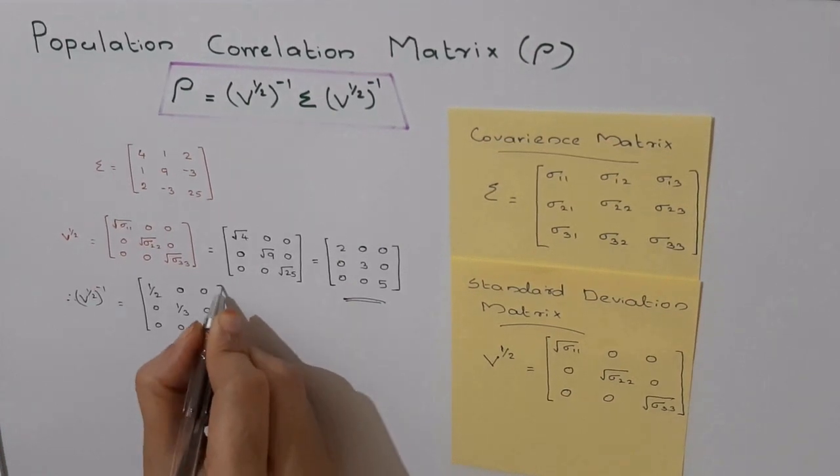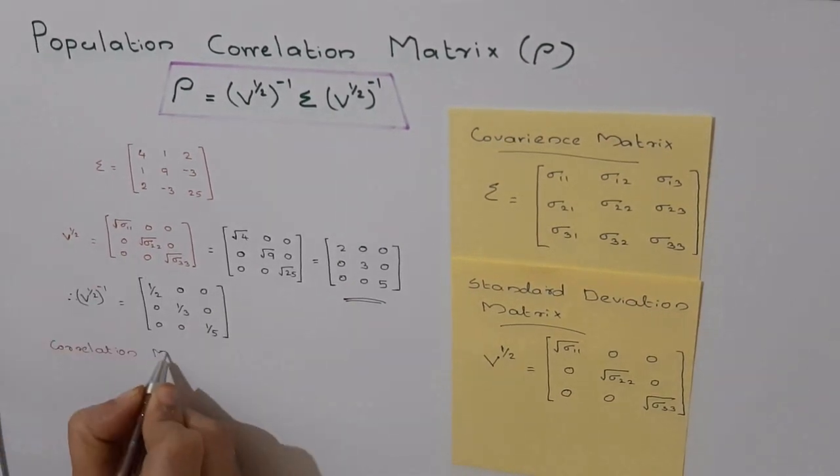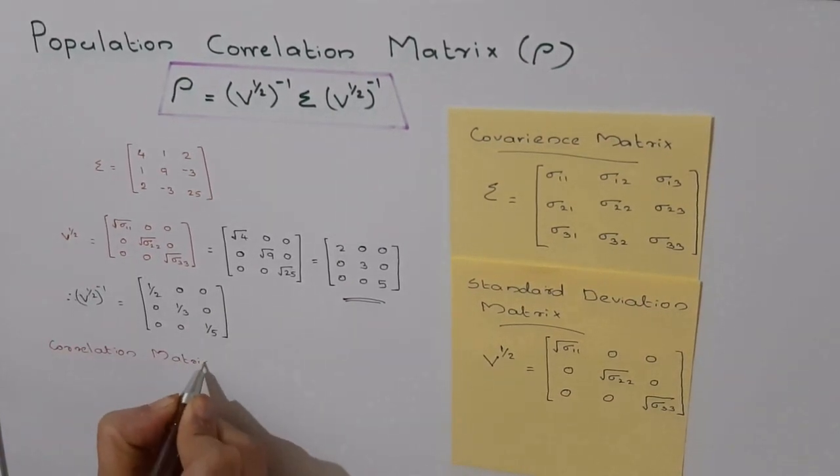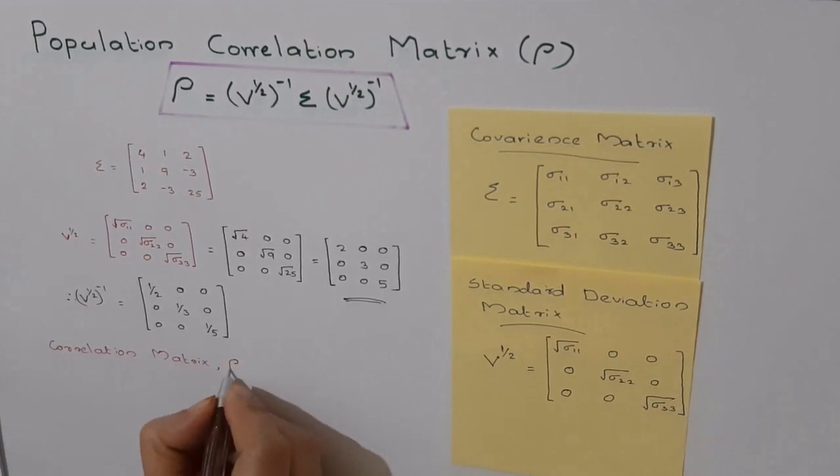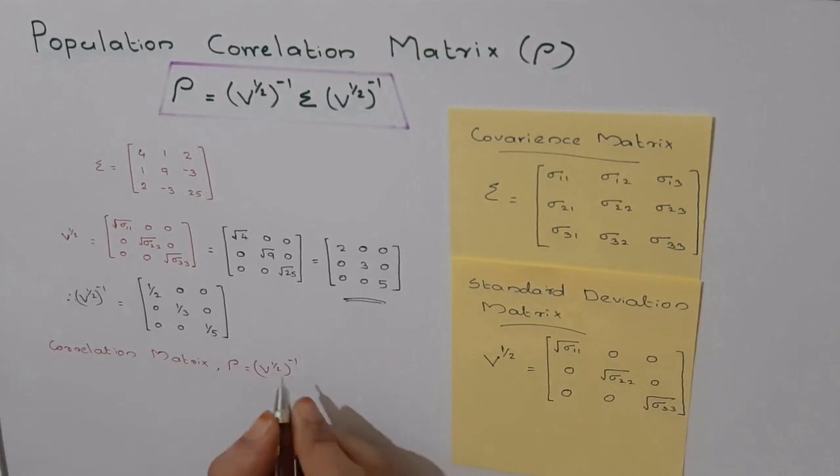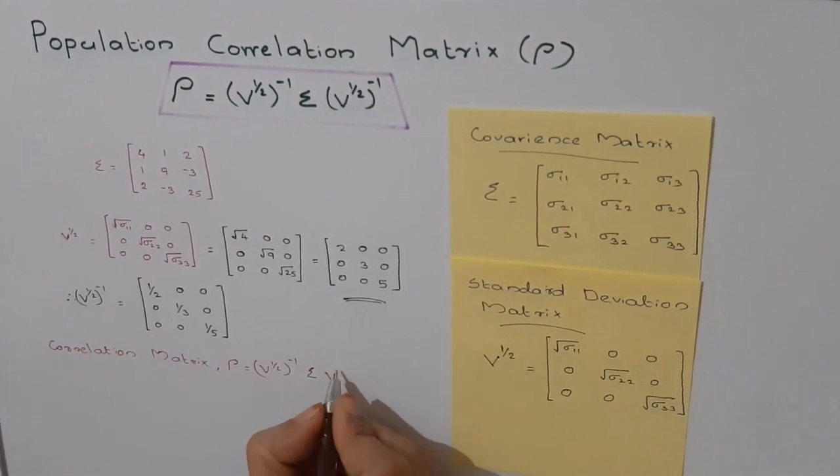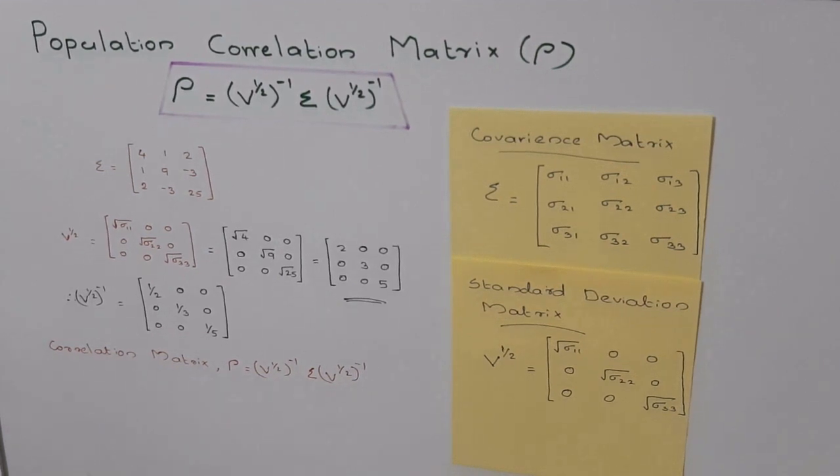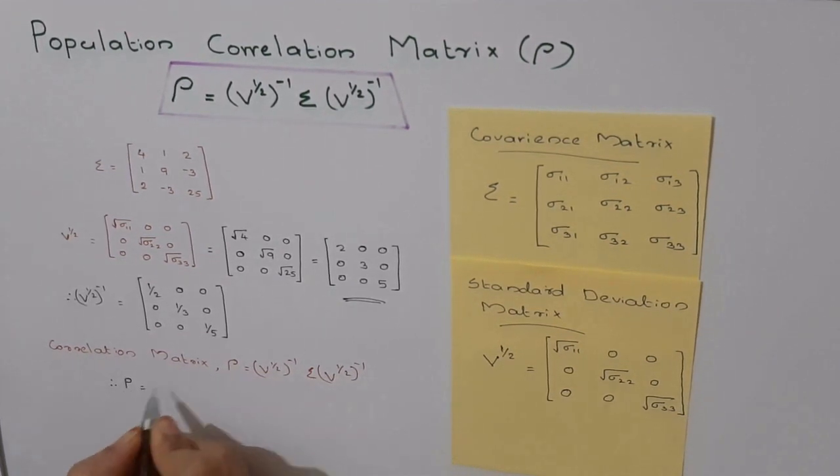Next we have to find the correlation matrix ρ. ρ equals V^(1/2) inverse Σ V^(1/2) inverse. Now we are substituting the values accordingly.